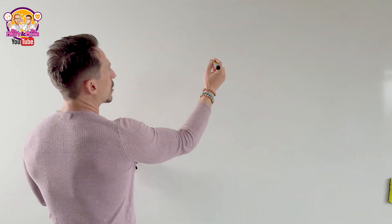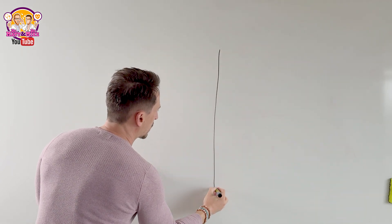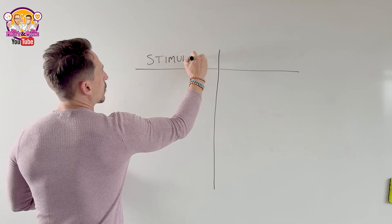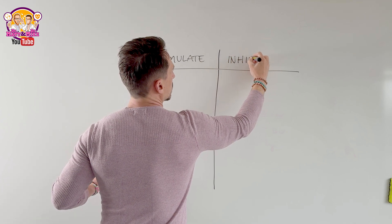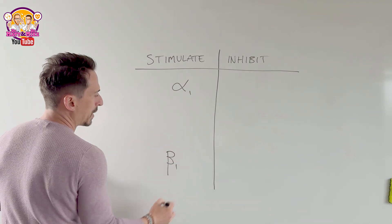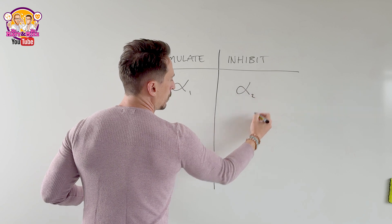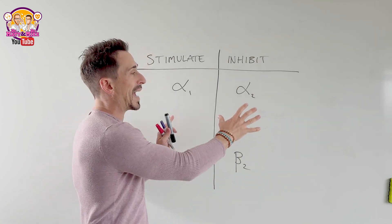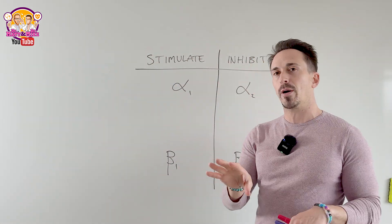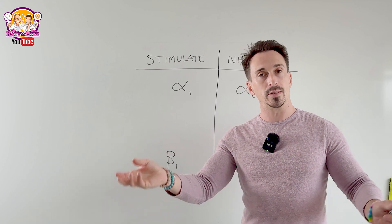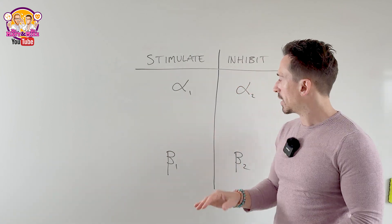There is a cheat sheet you can use. I want you to draw up a little table. On one side, write 'stimulate,' and on the other side, write 'inhibit.' Then write alpha-1, beta-1 on the stimulate side, and alpha-2, beta-2 on the other. For those well-versed in adrenergic receptors, there is also a beta-3, located on adipose tissue. When you stimulate beta-3 receptors, it tells the fat to break down — a process called lipolysis — releasing fatty acids into the bloodstream as an energy source. We're not focusing on that today, just these four.